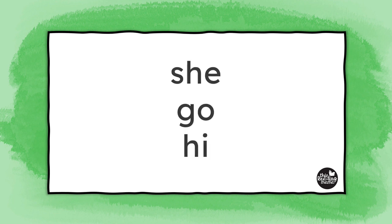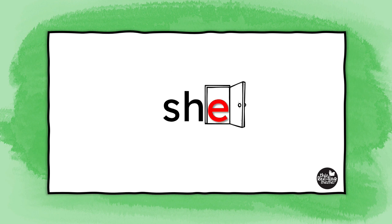Your learners read shorter open syllables every day — she, go, hi. Those are just three examples. While a closed syllable ends in one or more consonants, an open syllable ends in a vowel. I like to tell kids that when the syllable is open, the vowel gets to shout its name out the door. In other words, the vowel makes its long sound.